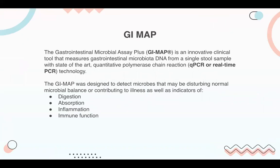So why the GI Map? The GI Map, also known as the Gastrointestinal Microbial Assay Plus, is an innovative clinical tool that measures gastrointestinal microbiota DNA from a single stool sample using state-of-the-art quantitative polymerase chain reaction — qPCR — technology. The GI Map was designed to detect microbes that may be disturbing normal microbial balance or contributing to illness, as well as indicators of digestion, absorption, inflammation, and immune function. Standard or traditional stool tests will not dive as deep as the GI Map in terms of looking at normal microbial balance and disturbances.